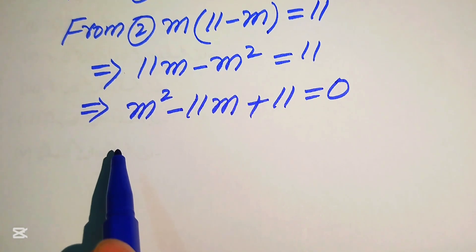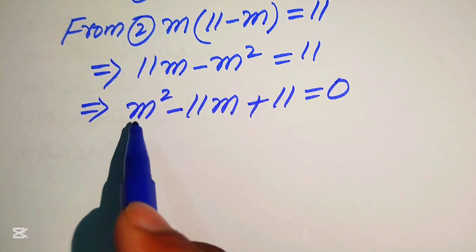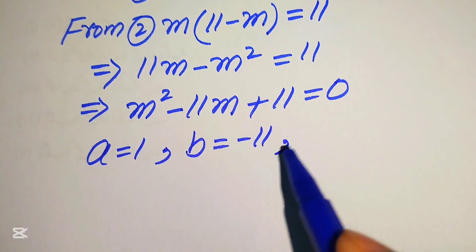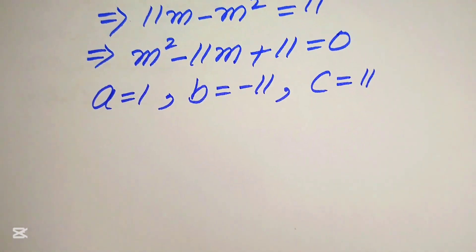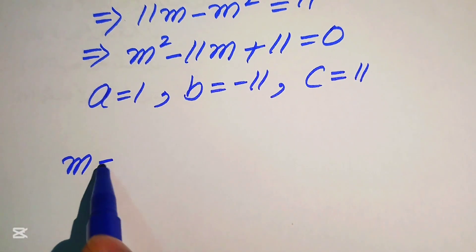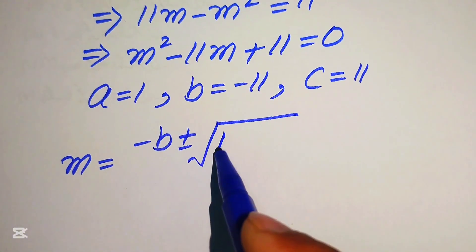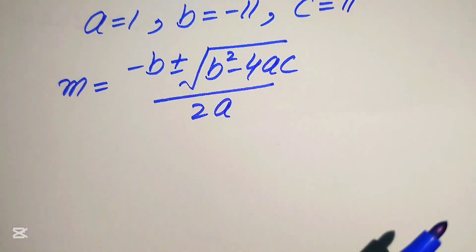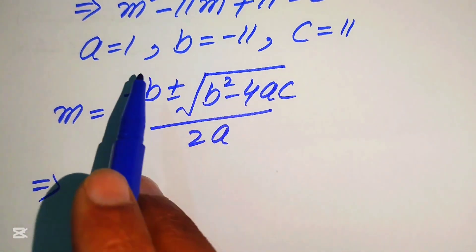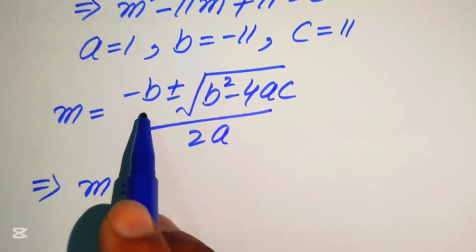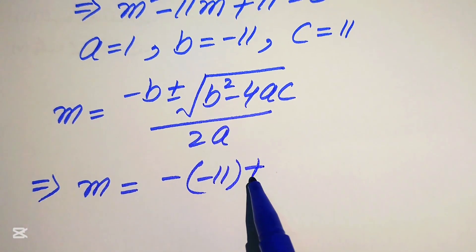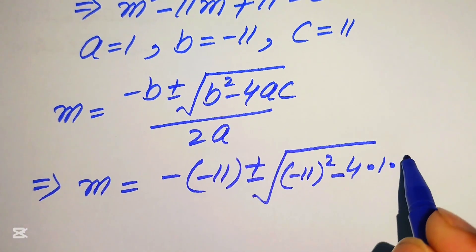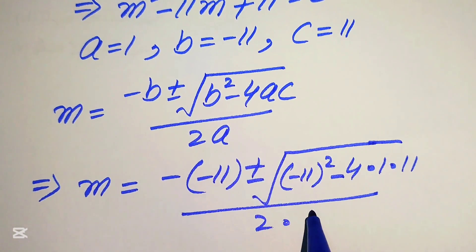We apply the quadratic formula. The coefficients are a equals 1, b equals minus 11, and c equals 11. The quadratic formula is m equals minus b plus or minus square root of b squared minus 4ac, divided by 2a. Substituting: m equals minus (minus 11) plus or minus square root of (minus 11) squared minus 4 times 1 times 11, divided by 2 times 1.